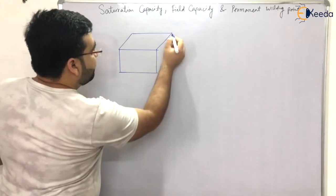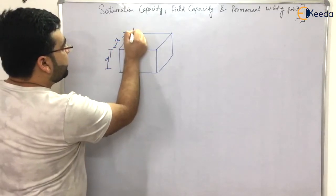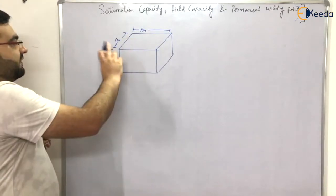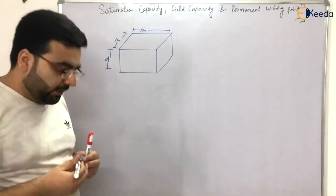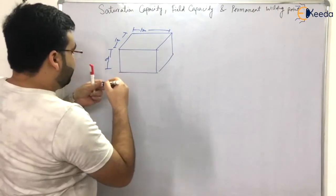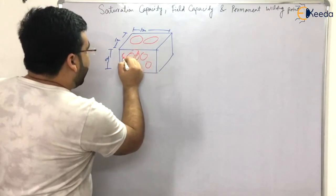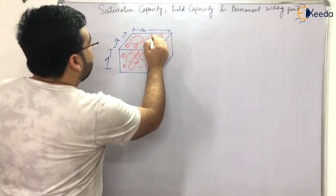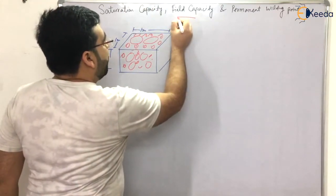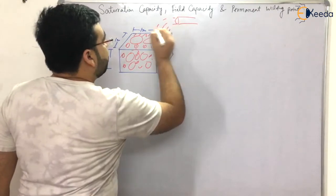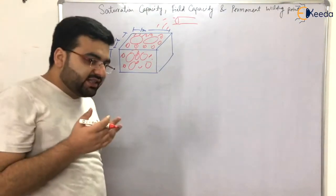Let's take a soil sample. The depth of this soil is D, the surface area is one meter square — one meter by one meter. So we have a particular cube sample of depth D, length one meter, and width one meter. Now if I pour some water on this soil sample, where will this water go?